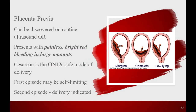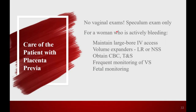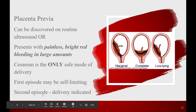Let's first discuss placenta previa. Marginal means a corner covers the os. Complete means the placenta is directly over the os. Low-lying doesn't even count as a placenta previa — it's just when the placenta is lower in the uterus. The normal spot for implantation is higher up. We see more placenta previa after a woman has had uterine surgery, especially cesarean section, because there's scar tissue.